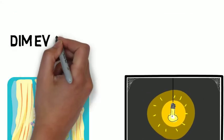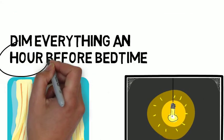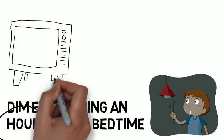At night, dim everything an hour before you go to bed. Switch off lights, the television and mobile devices as well.